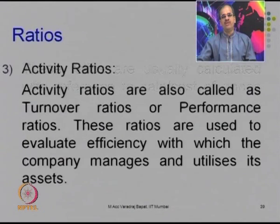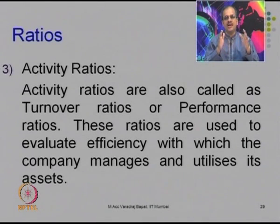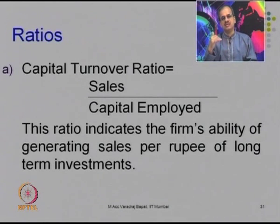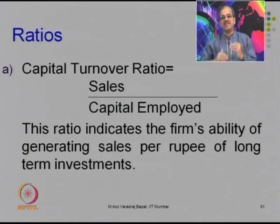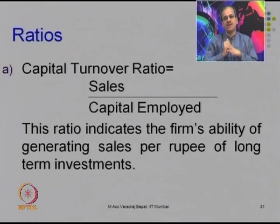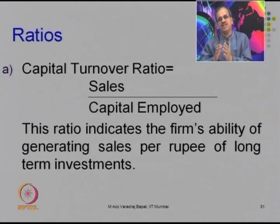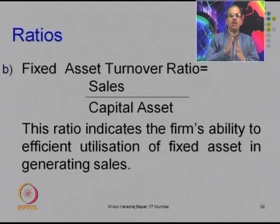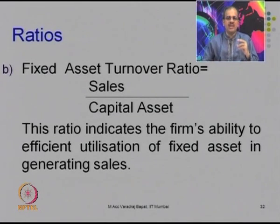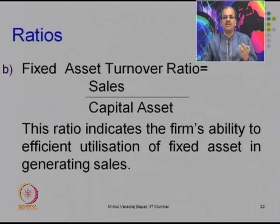The next type are activity ratios, also known as turnover ratios. The first is the capital turnover ratio, which tries to find how many times sales are generated relative to capital employed — sales upon capital employed. This ratio should be higher, as it indicates the entity is efficient and able to generate more sales using the same amount of capital. Similarly, fixed asset turnover ratio relates sales to fixed assets; if the company generates more sales using the same fixed assets, it shows effective utilization.